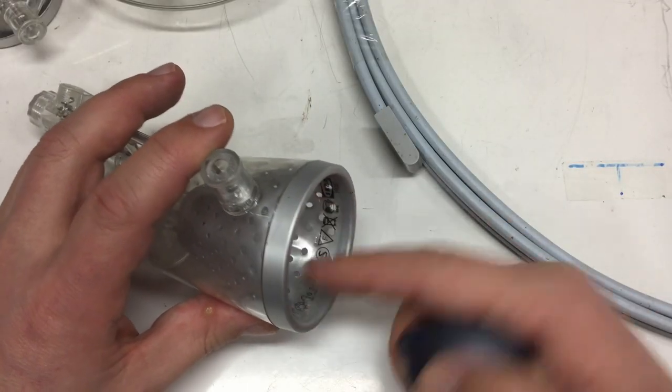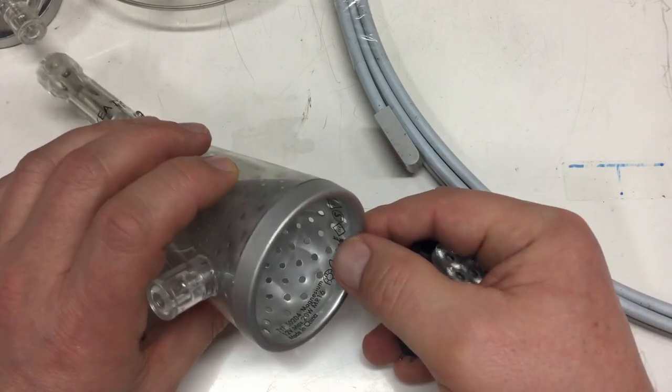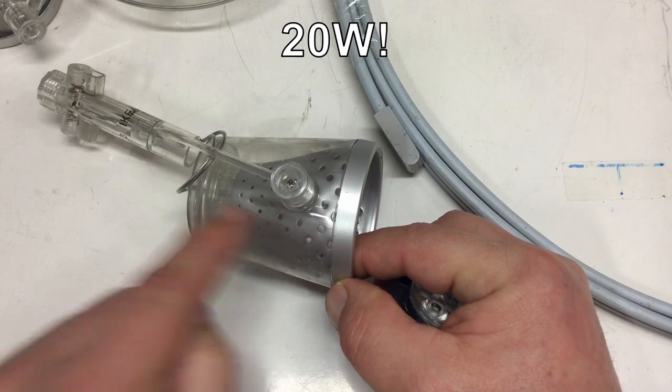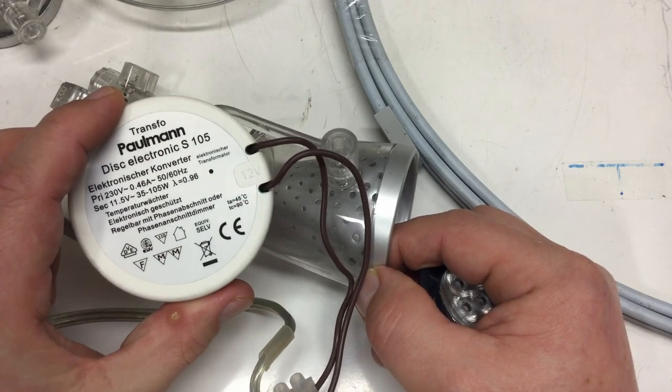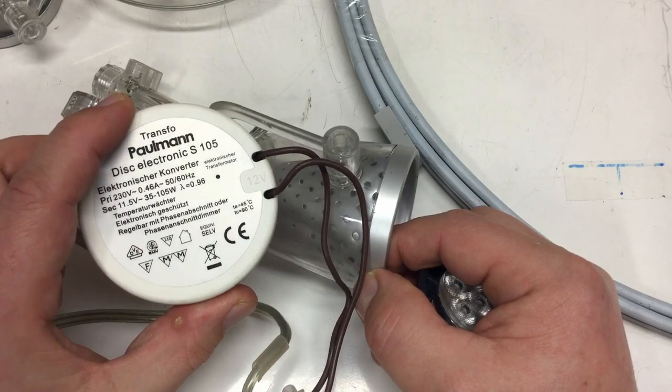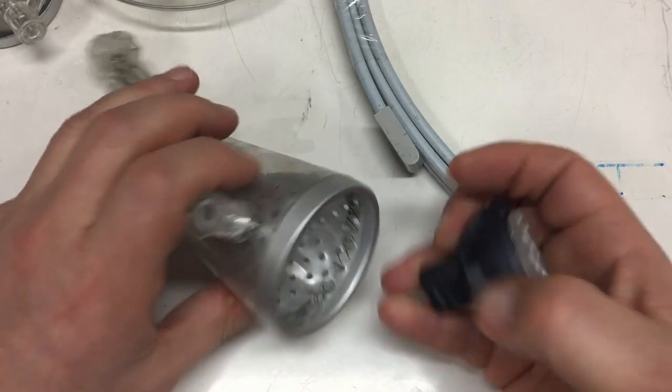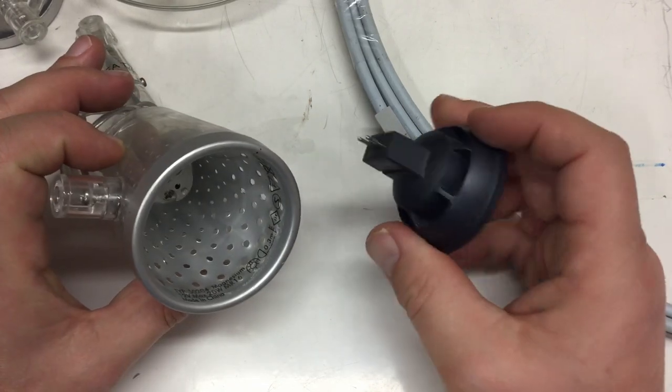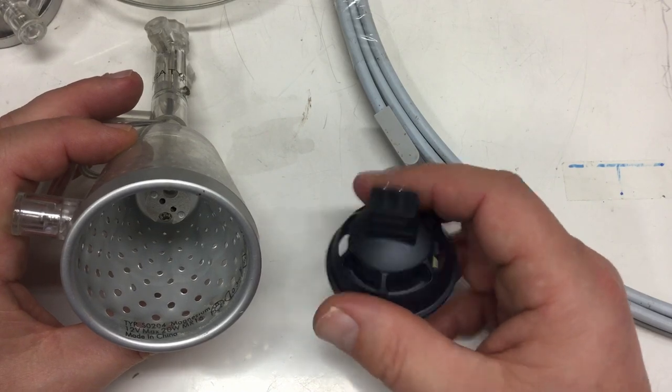I wonder if I can get 20 watt light bulbs. As I said before, these things were probably initially made for halogen light bulbs, and they can take up to 50 watts. And I have five of them, so 100 watts. And that thing here can provide up to 105 watts. So room for improvement if I can get LED light bulbs with that type of socket, which I have to identify.